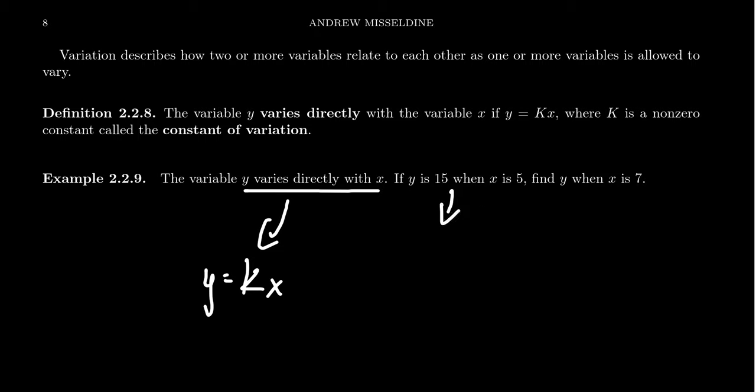So this first thing gives us a data point. When x is 5, y is 15. And then we have to figure out what is y when x is equal to 7. That's what we're trying to figure out right here. What is the y-coordinate when x is 7?